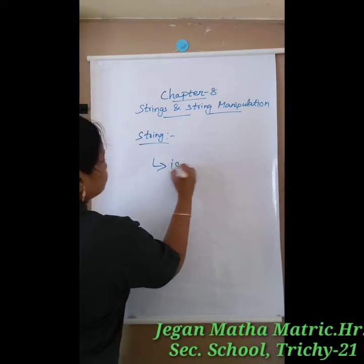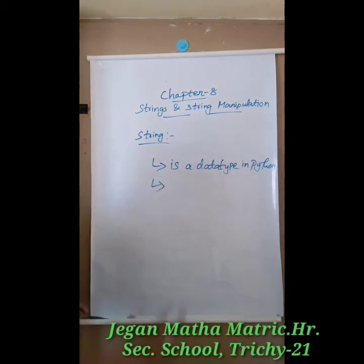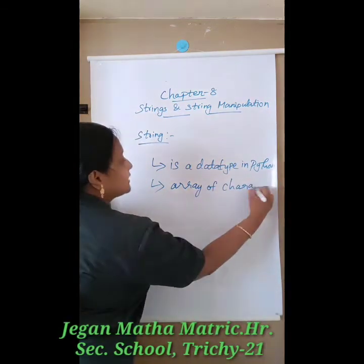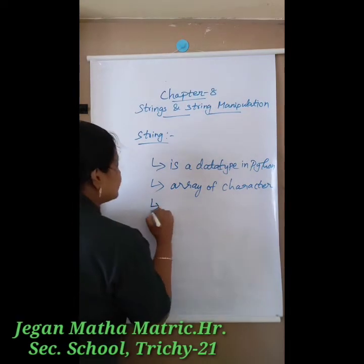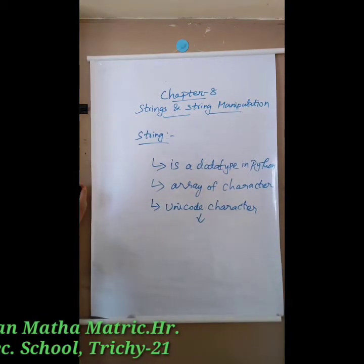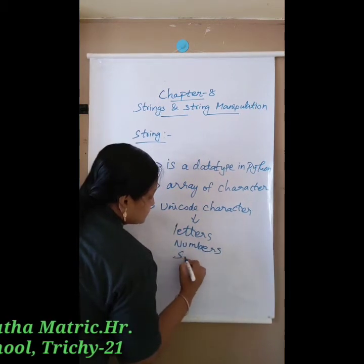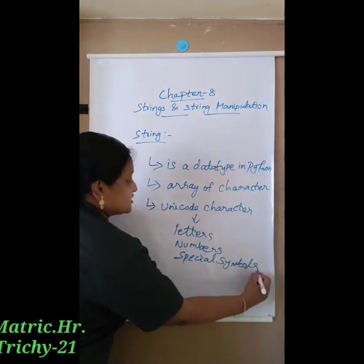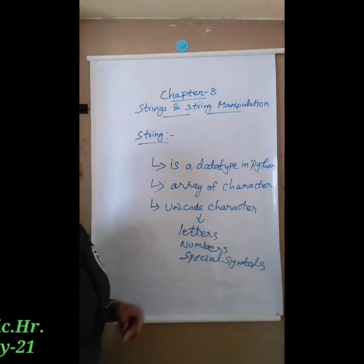String is a data type in Python. It is used to handle an array of characters — that is, a sequence of letters and words. String is a sequence of unicode characters, where unicode characters means letters, numbers, or special symbols. It is enclosed within single quotes, double quotes, or triple quotes.